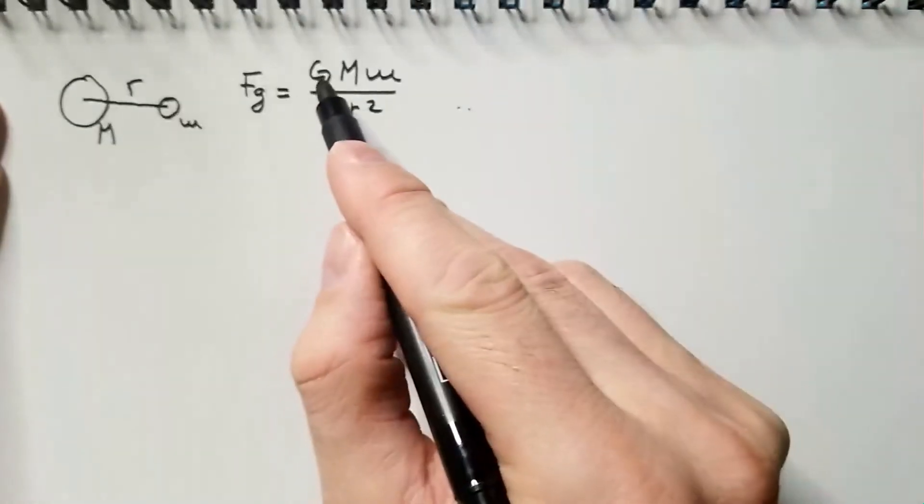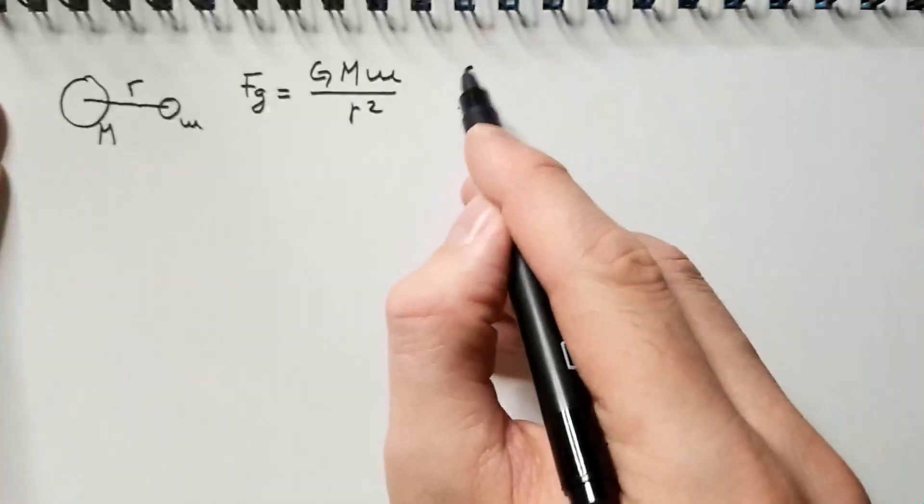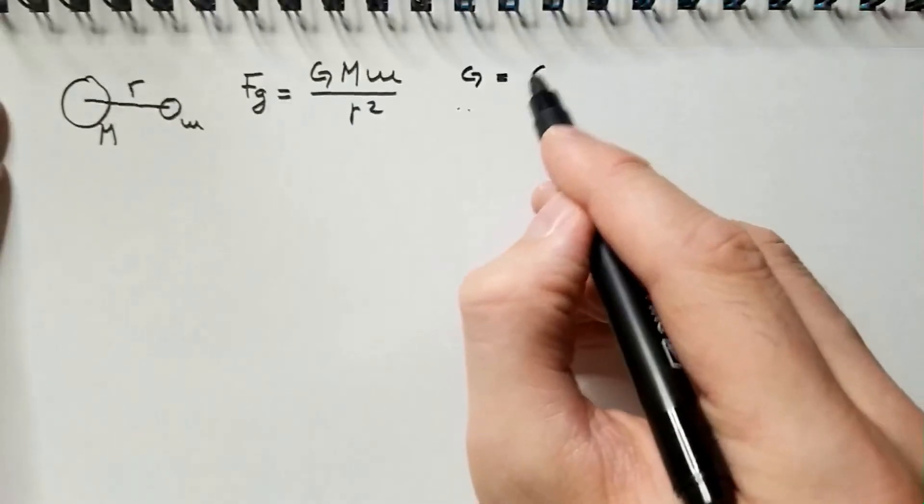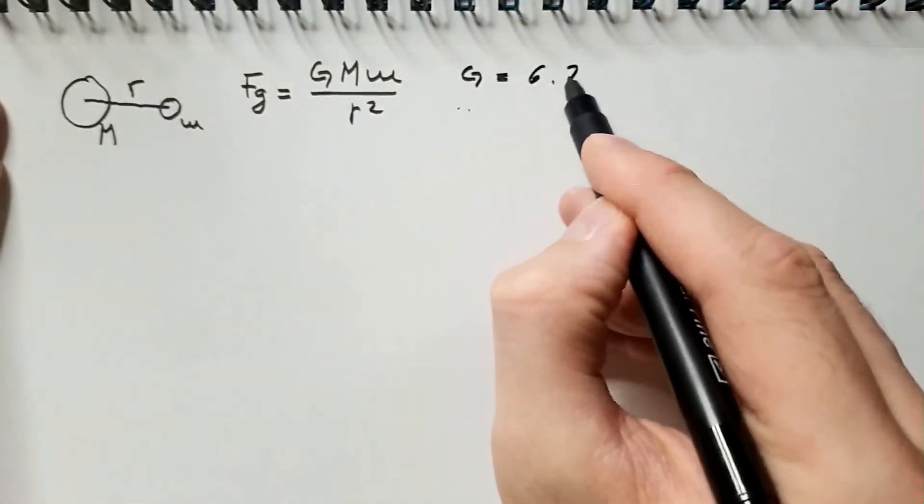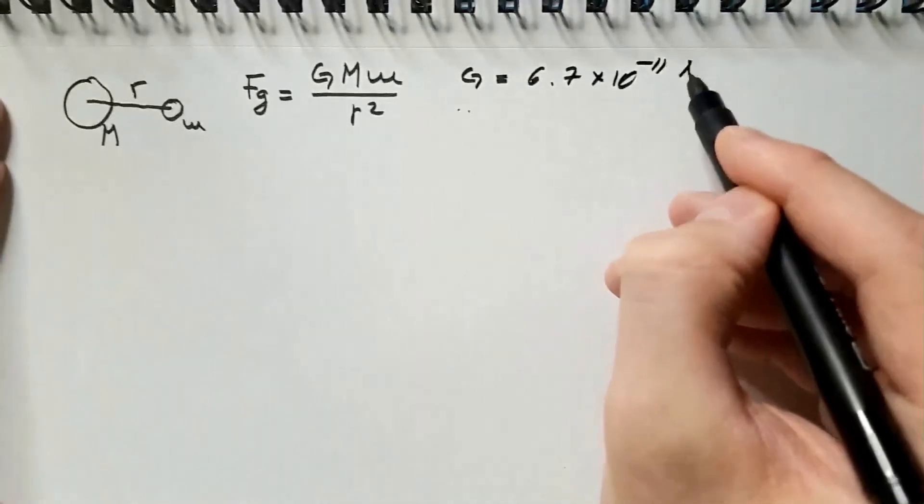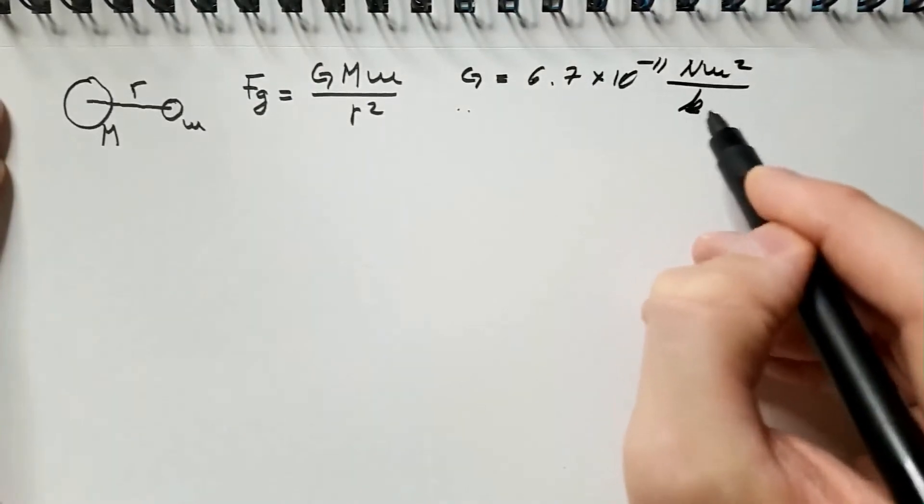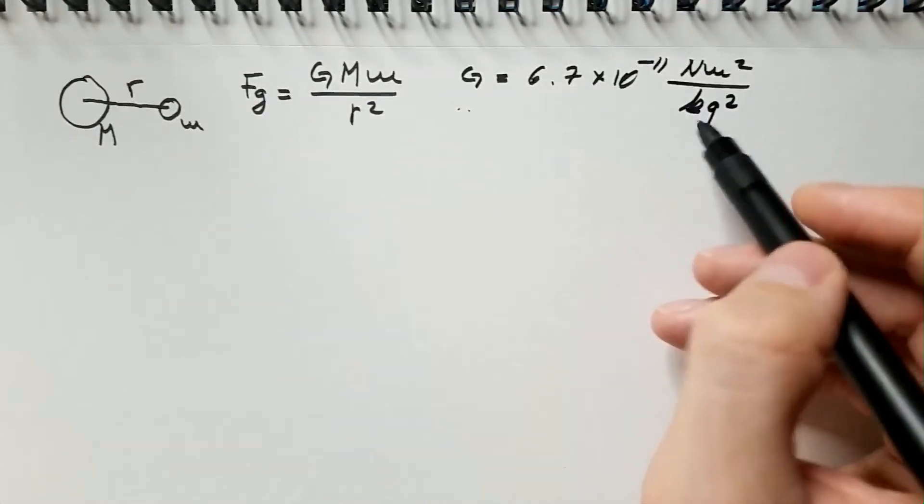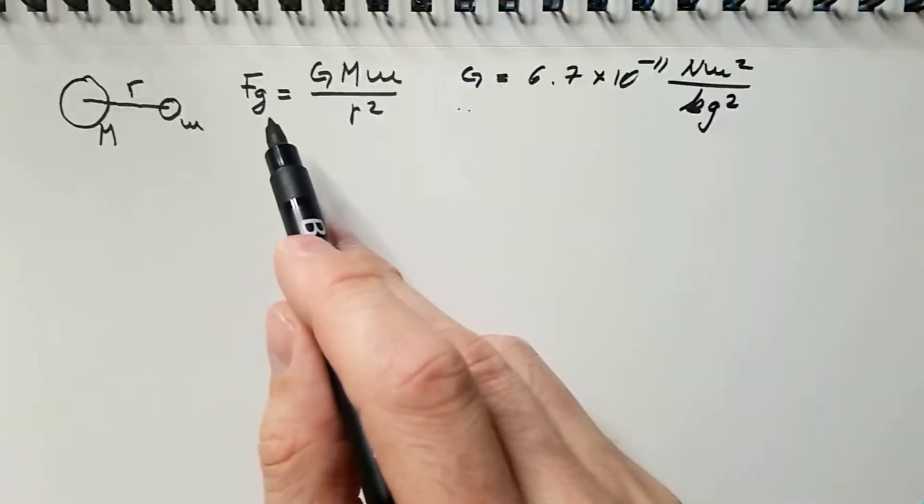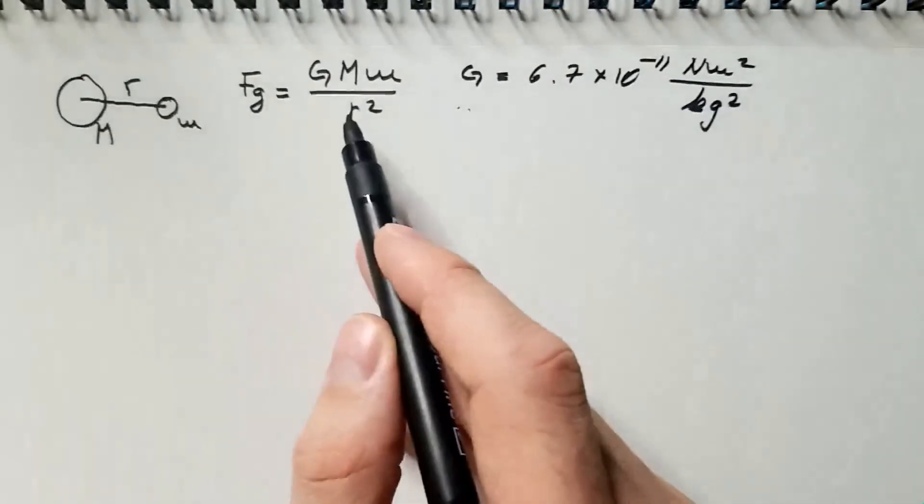Where G is the so-called gravitational constant, it has value of approximately 6.7 times 10 to the power of minus 11 newton times m squared per kilogram squared. This small value of G tells us that gravity is indeed a very weak force, in fact, enormously weaker than electrical forces.